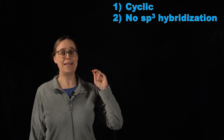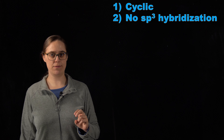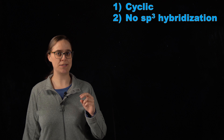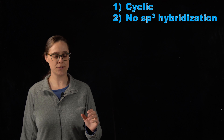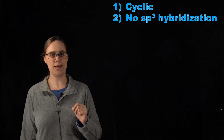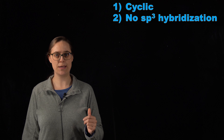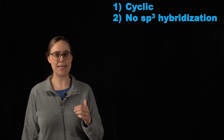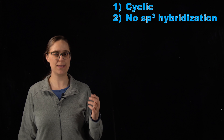Rule number two: we can have no sp3 hybridized atoms anywhere within the ring. This takes care of the part of the definition about an uninterrupted cloud of pi electrons and the fact that the molecule needs to be planar. In order to have an uninterrupted cloud of pi electrons, each and every atom in the ring has to have at least one unhybridized p orbital. So sp2 and sp hybridization states are good, but sp3 hybridized atoms have no unhybridized p orbitals and therefore interrupt that cloud of pi electrons.